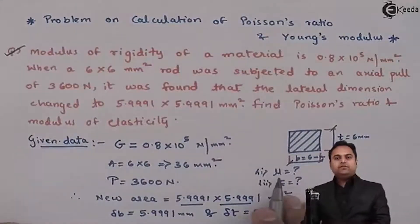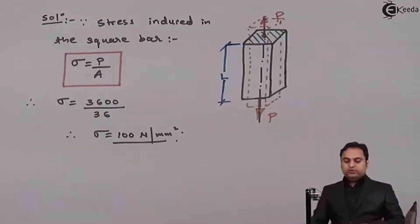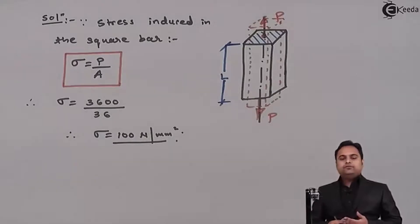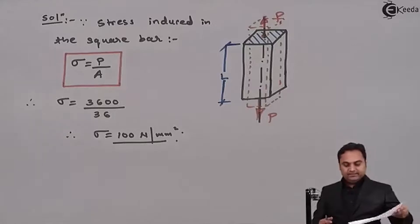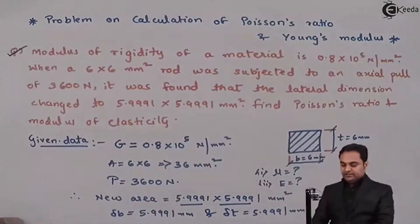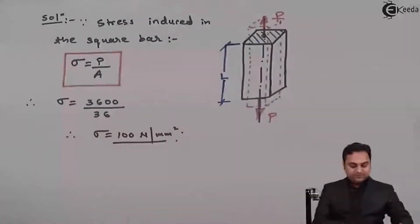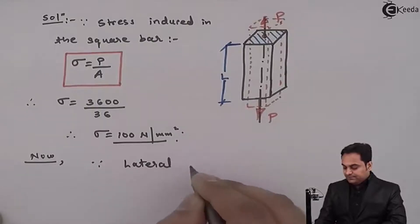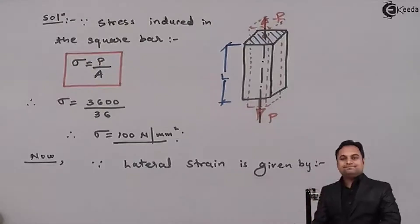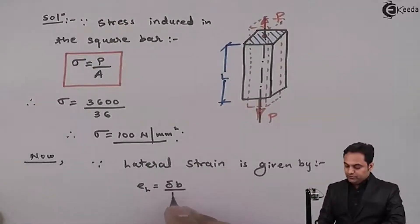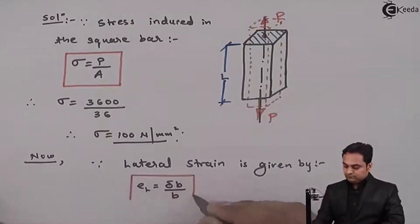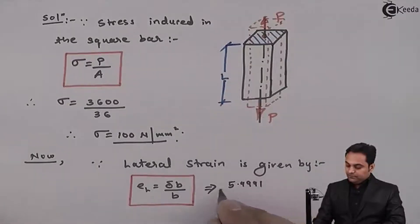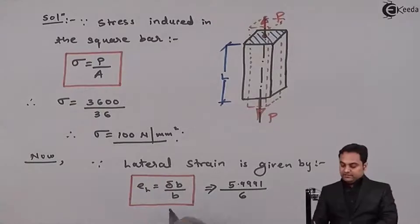After getting stress, the first question is we want the value of mu. To calculate mu, which is Poisson's ratio, it is given by lateral strain upon linear strain. To calculate mu, first we should have the lateral strain. As we have delta B and delta T, we can select any one of them and find the lateral strain. Lateral strain is given by change in width upon original width. The change in width value is 5.9991 and original width is 6.